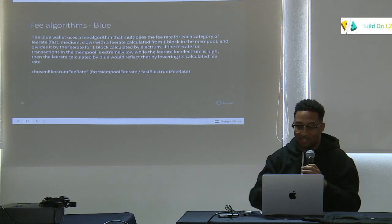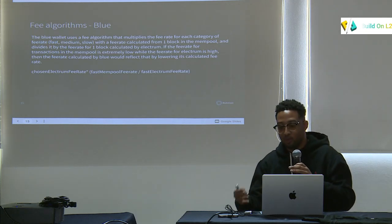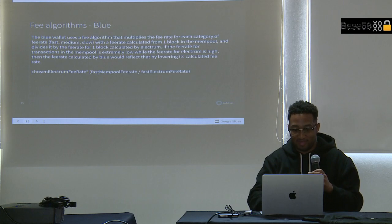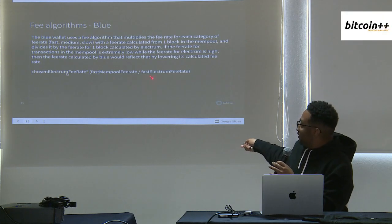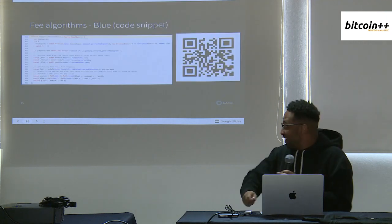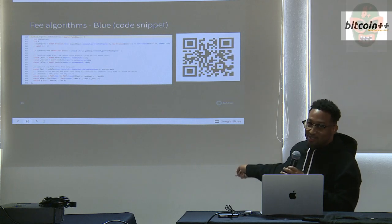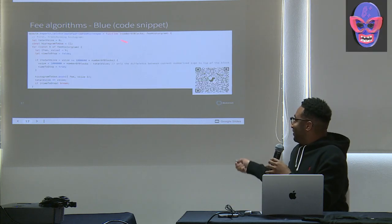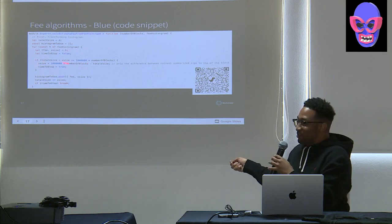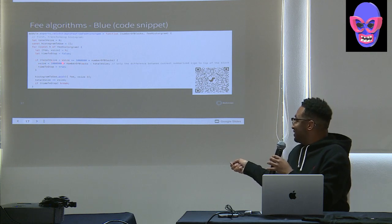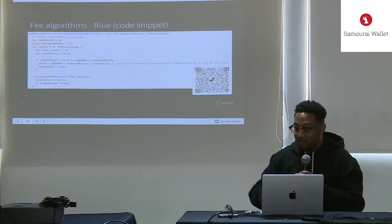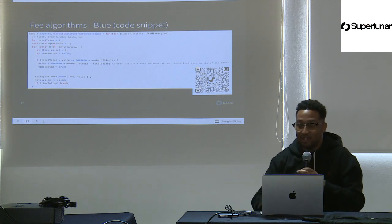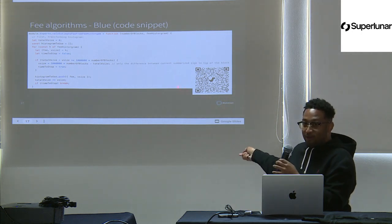Here's a code snippet for Blue's algorithm. If the fee rate for the transaction in the mempool is extremely low while the fee rate from Electrum is high, Blue tries to account for that by discounting the fee rate. This is a simplification — you can scan the QR code to see the actual implementation. This is all open source; you can go to the Blue Wallet repo and look at this yourself.